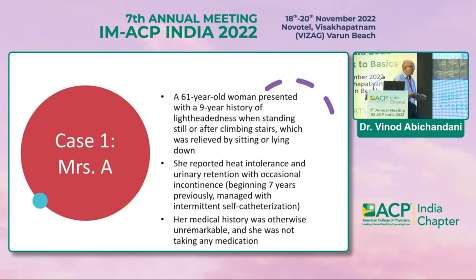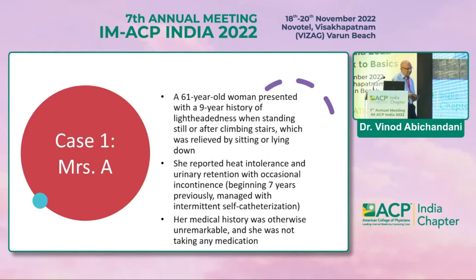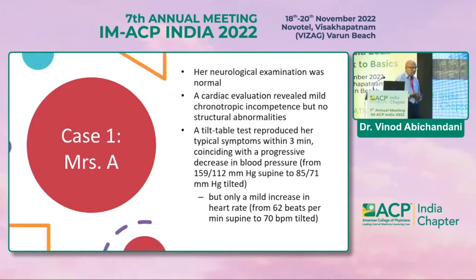Case 1: A 61-year-old woman presented with a nine-year history of lightheadedness when standing still or after climbing stairs, relieved by sitting or lying down. She reported heat intolerance and urinary retention with occasional incontinence beginning seven years earlier, managed by intermittent self-catheterization. Her medical history was otherwise unremarkable and she was not taking any regular medications. Neurological examination was normal; cardiac evaluation revealed mild chronotropic incompetence but no structural abnormalities. A tilt table test reproduced her typical symptoms within three minutes.